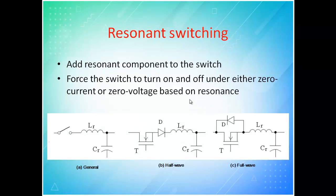Our motive is to turn on and turn off when voltage or current is coming to zero. If one of them is zero, there is no simultaneous existence of V and I — that is the main motive for resonance switching. We add resonance components to the switch: a resonance inductor Lr in series and a resonance capacitor Cr in parallel. With these two, we force the switch to turn on and off under either zero current or zero voltage.